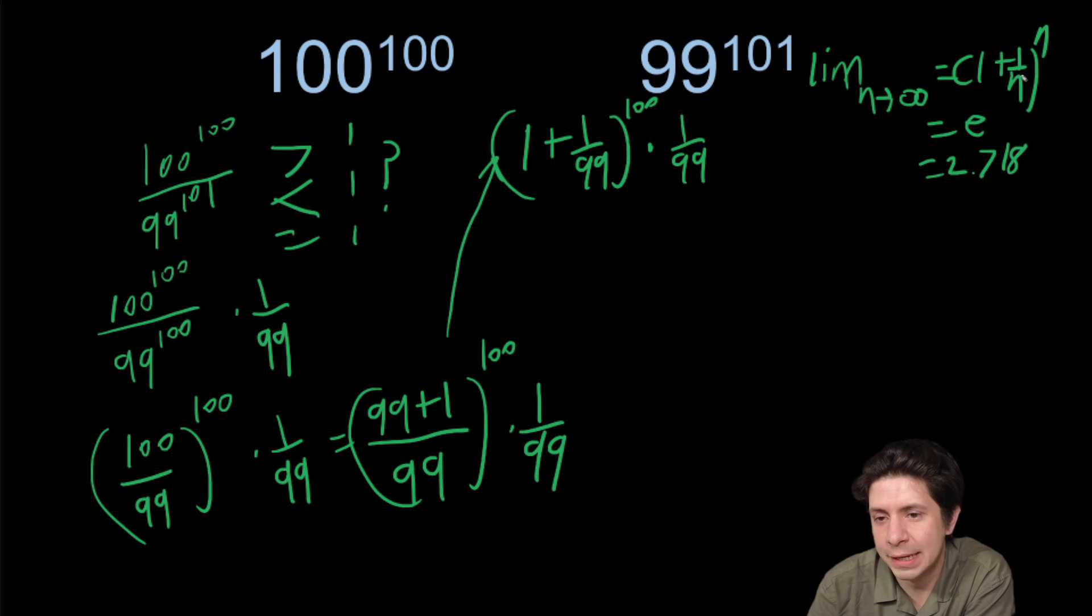And if we plug in here, let's say we did one, it'd be one plus one over one to be two to the one, so that'd be two. So we can see that it's starting below 2.718 and it's going to climb up to 2.718, but never go above it. So our max on that would be 2.718.